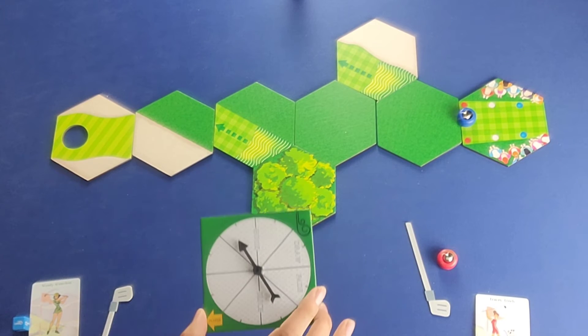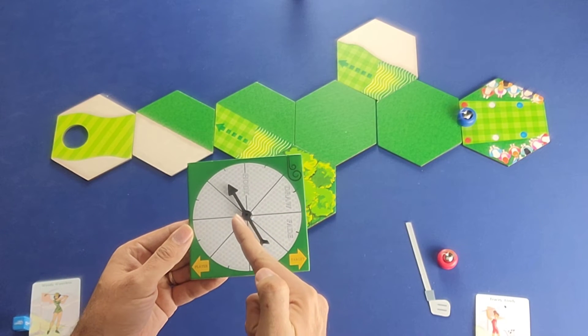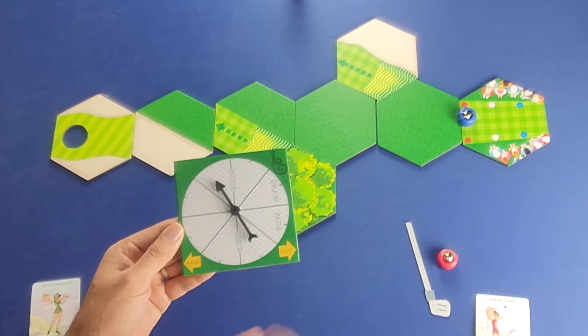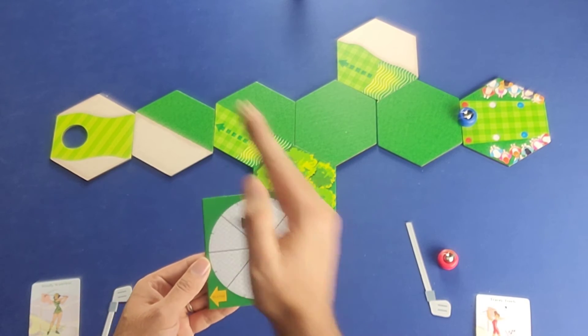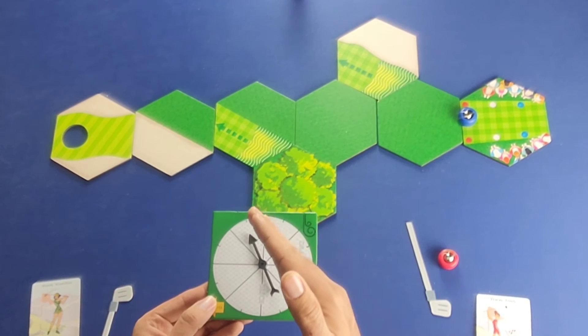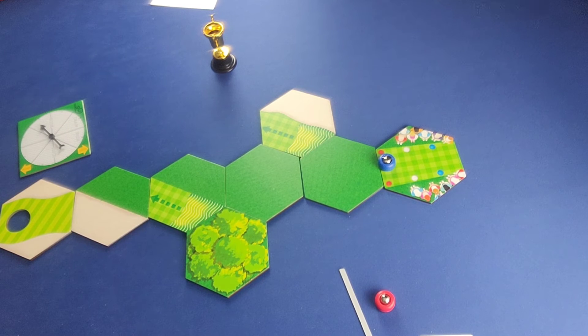Okay. So whenever, wherever the ball finishes or wherever the ball lands, I'm going to move it in this direction. But because I rolled the double wind, I'm going to move it two ball spaces in that direction. So, from this angle, it would be to the right and upward diagonally. And now this player here is going to take their shot.